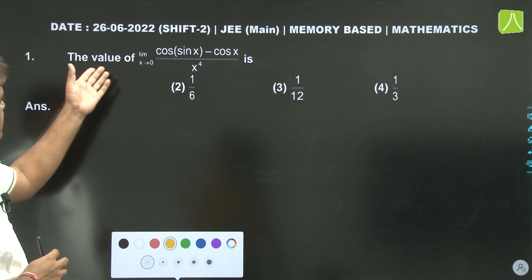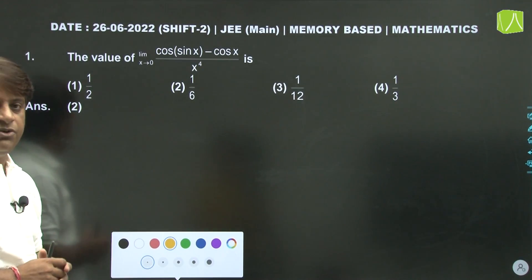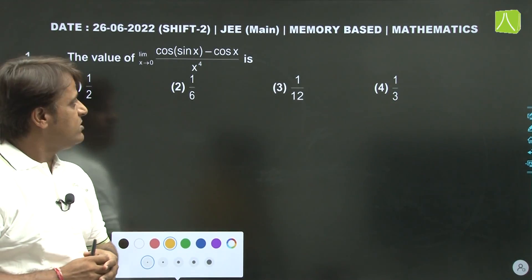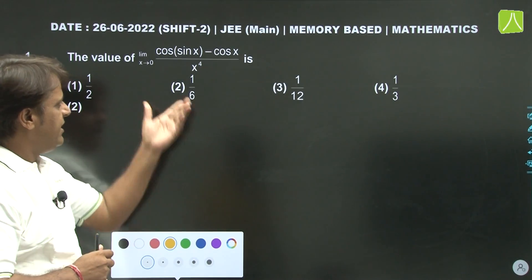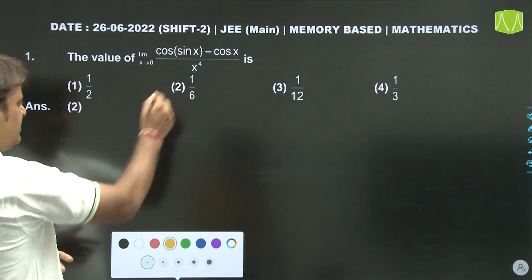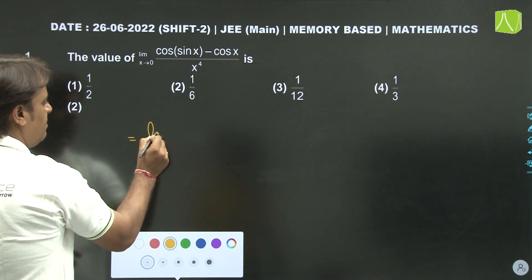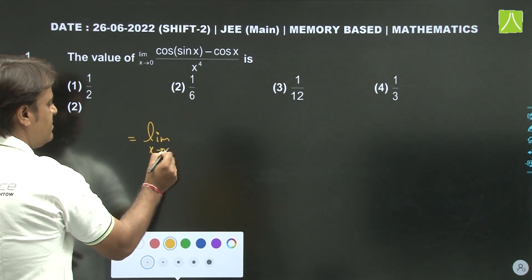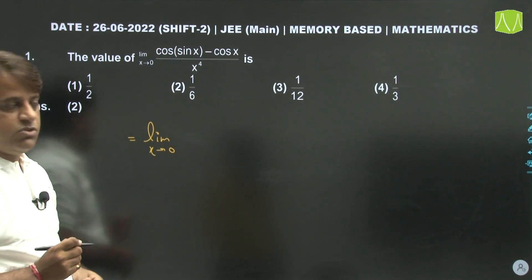First question is from limits: limit x tending to 0, cos(sinx) minus cosx upon x power 4. It is a very easy question. We apply the identity cos C minus cos D, which equals minus 2 sin((C+D)/2) sin((C-D)/2).